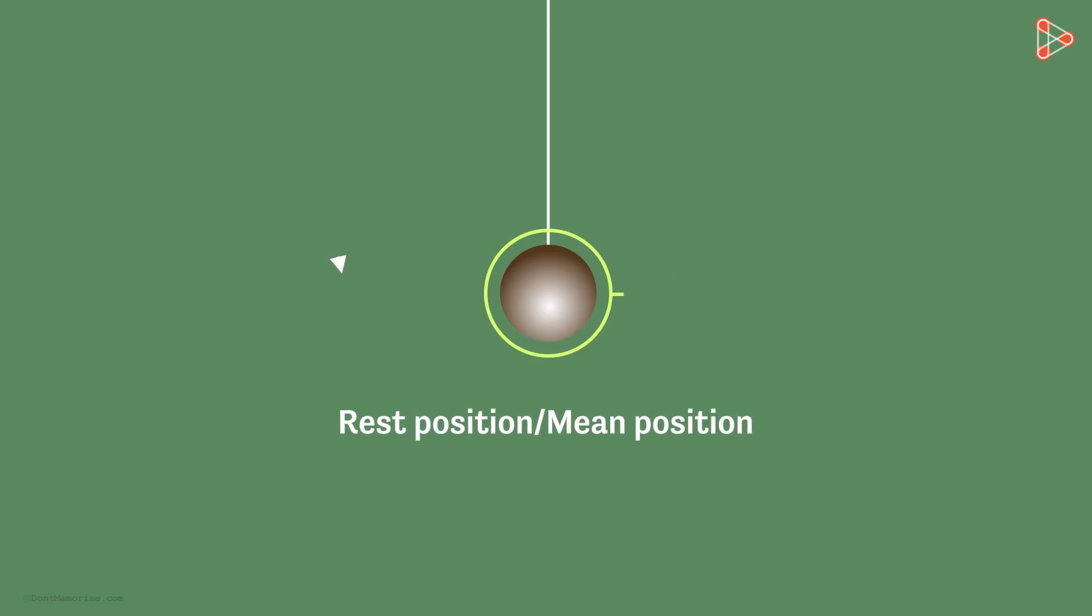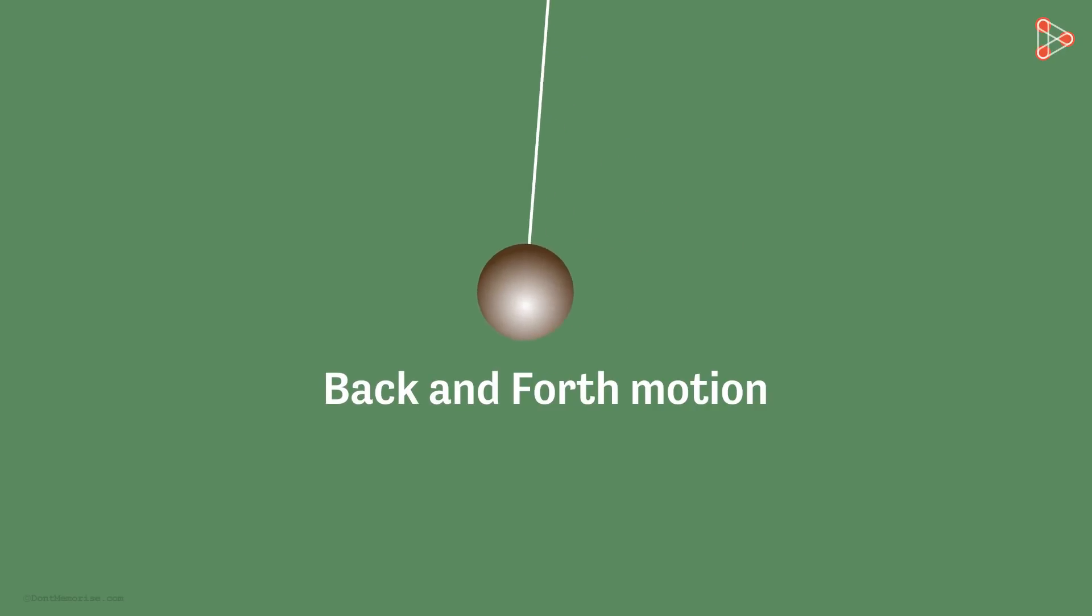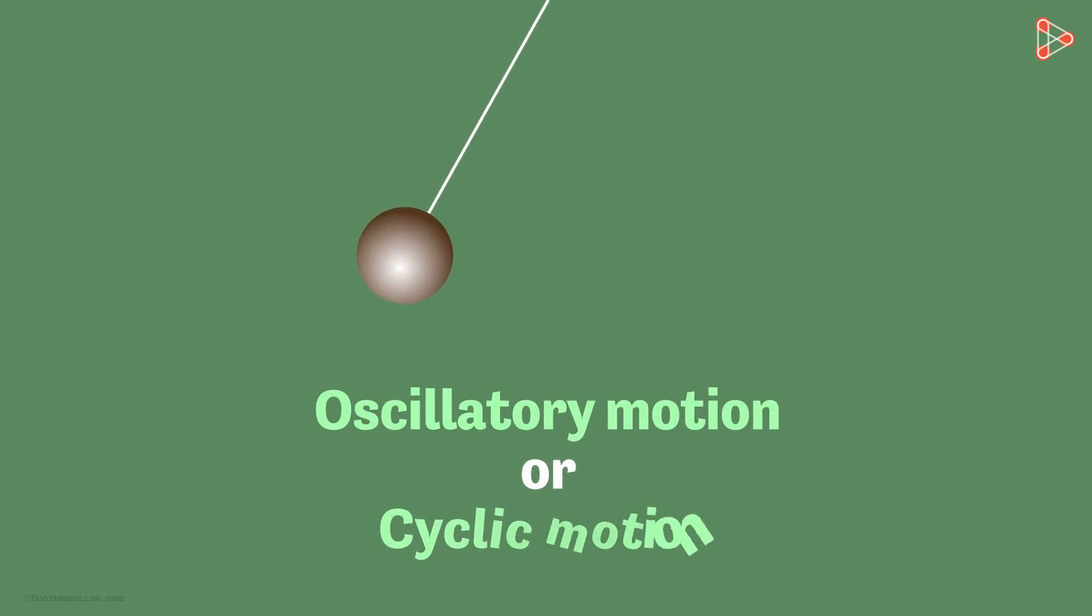Now what will happen if I give this bob a little push in either of the directions? You see that it starts moving back and forth. This back and forth motion is repetitive in nature and hence this motion of the bob is also called the oscillatory motion or the cyclic motion.